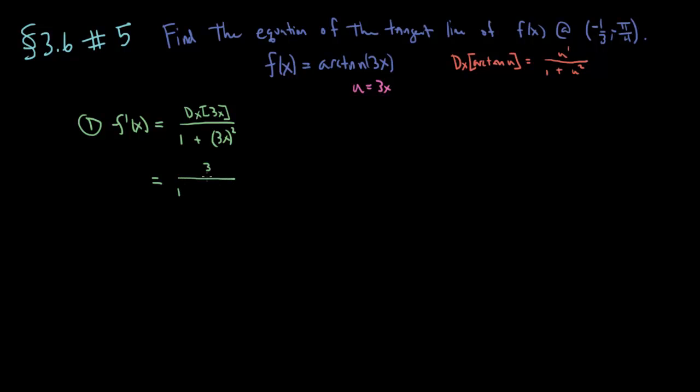Then 1 plus 3x squared. Well, that's not so bad. So let's finish it out. The derivative of 3x is simply 3, then 1 plus 9x squared. So there is f prime. Not so hard to come by.